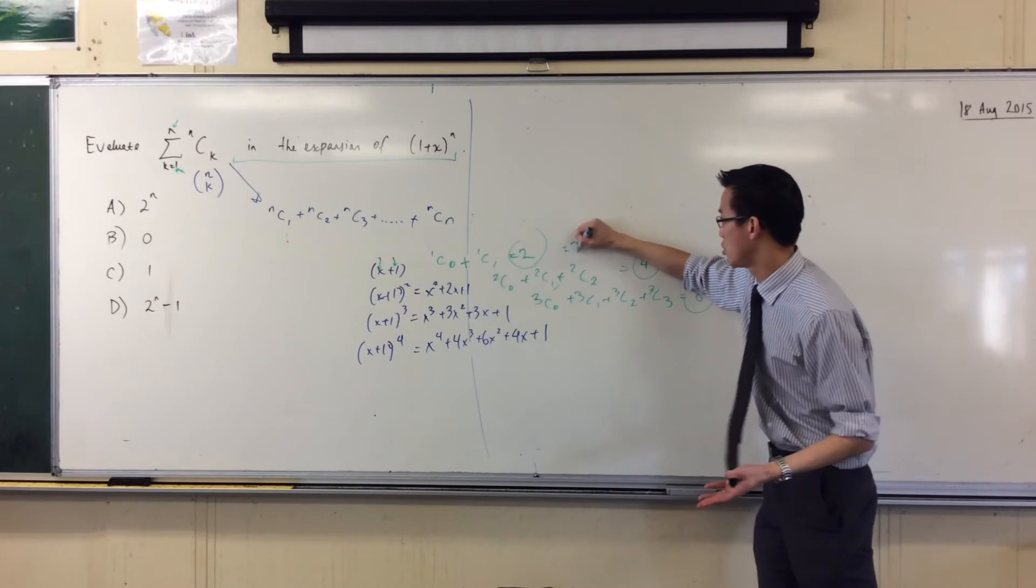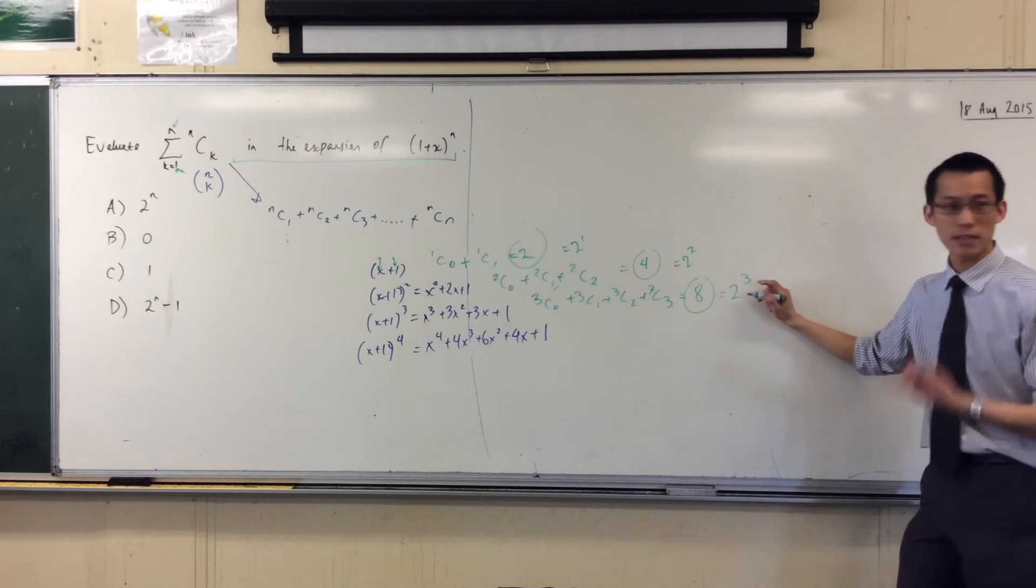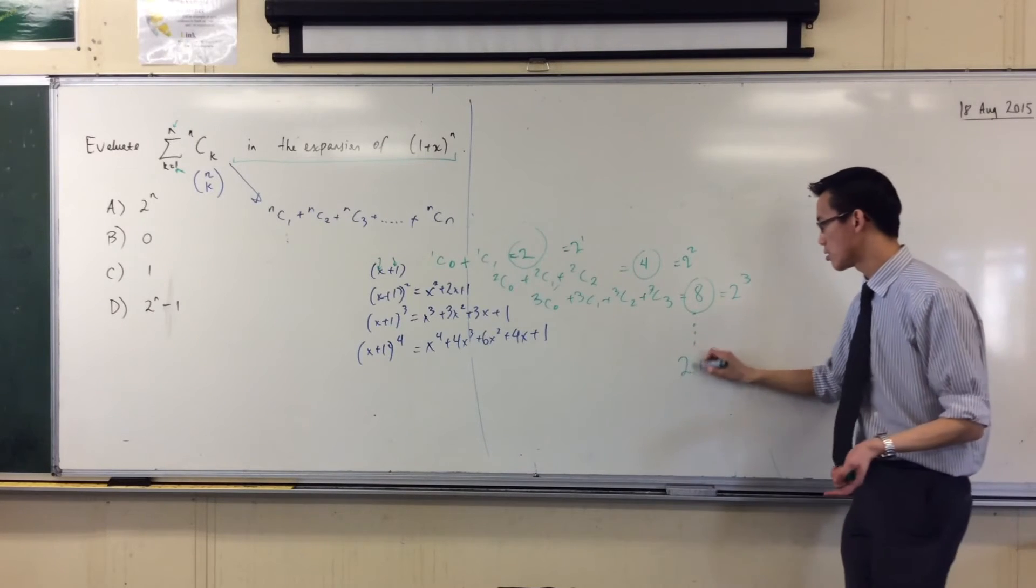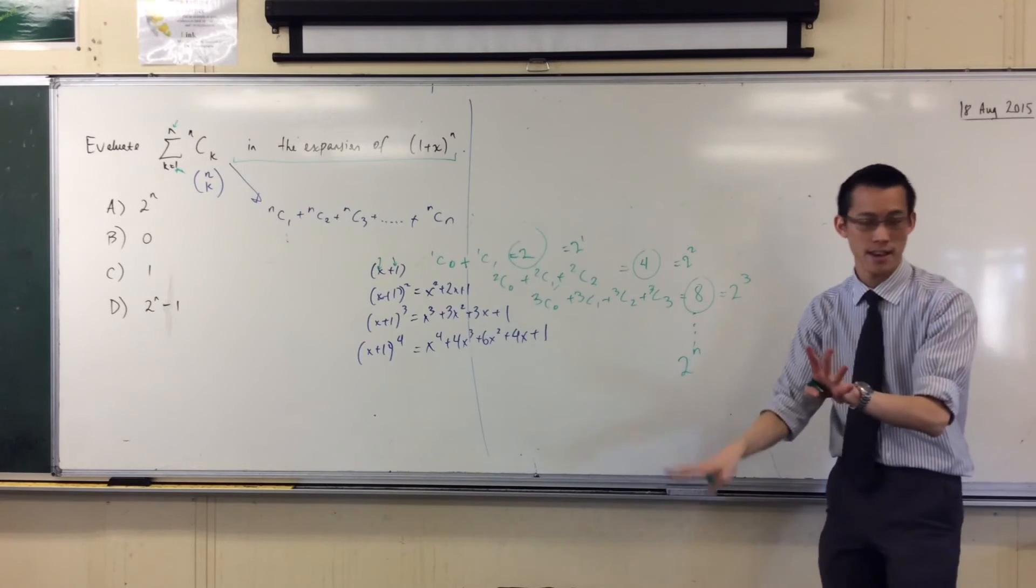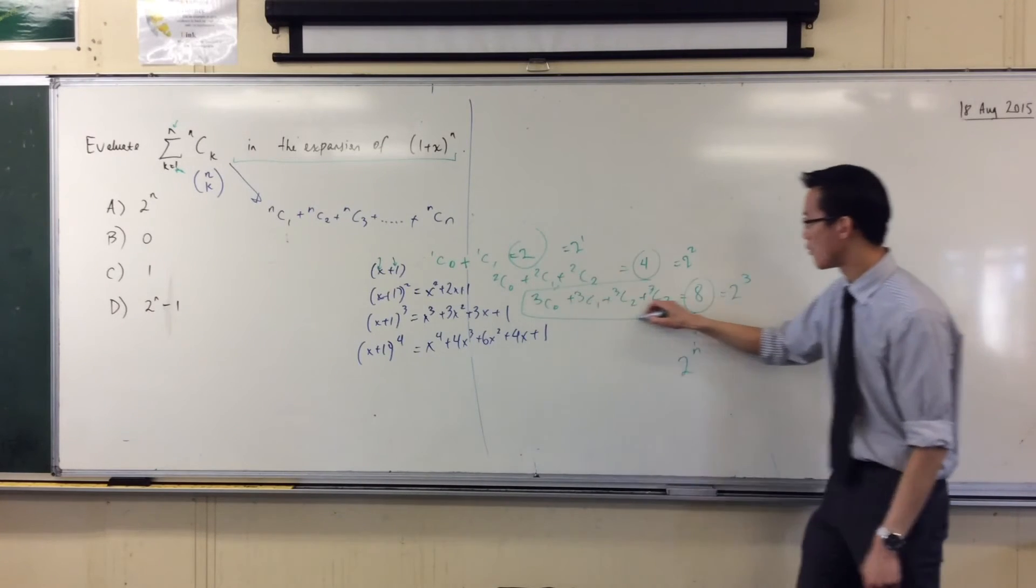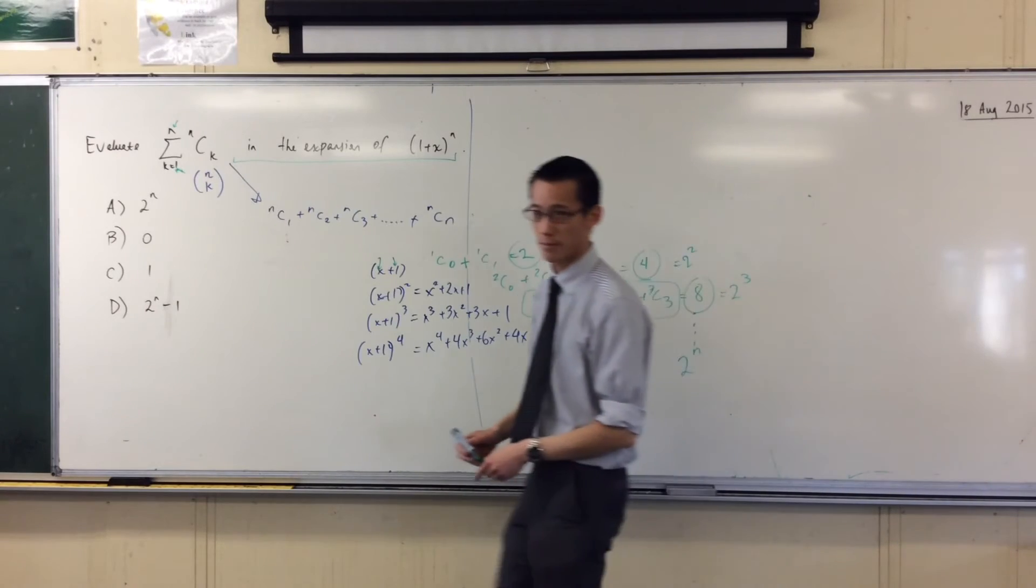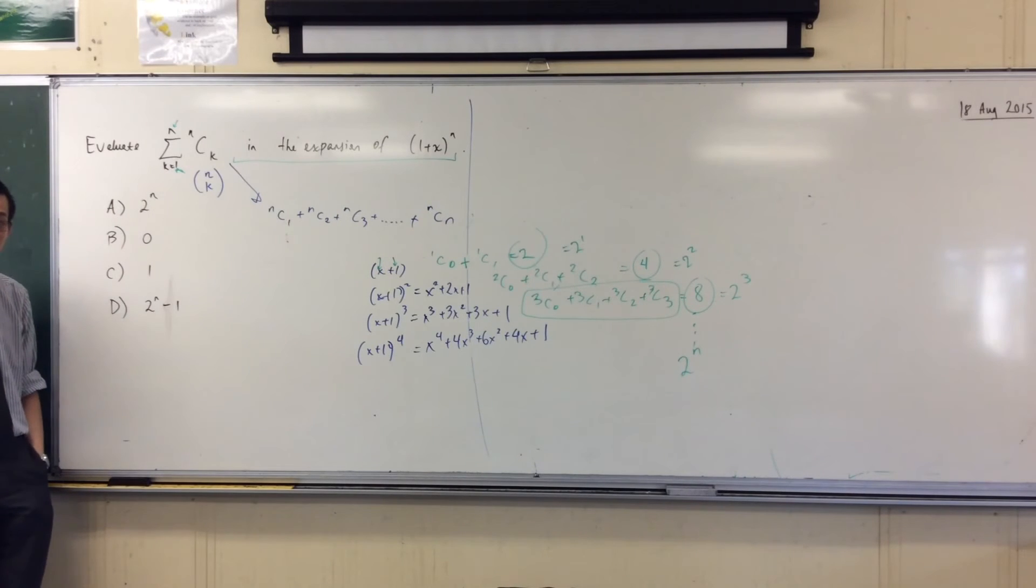So the pattern has formed. You see the pattern? Now therefore you can rewrite these numbers as 2 to the 1, 2 squared, 2 cubed. In other words, it's 2 to the n. Careful, not at the answer yet. It's 2 to the n if I add up all of the items in the row. Does that make sense? I've got to add them all up. Now look carefully at the question. Read carefully. Is the question asking me to add up all the terms in the row?